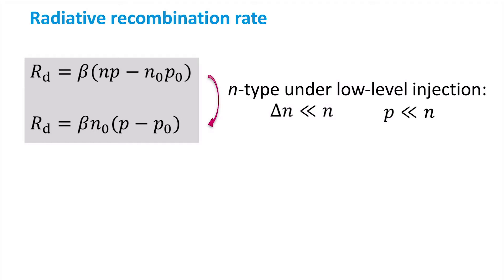This leads to the following expression, where the term between parentheses is effectively the excess free hole concentration. This gives us the radiative recombination rate for N-type semiconductors under low-level injection.